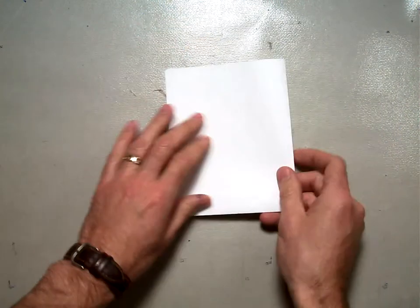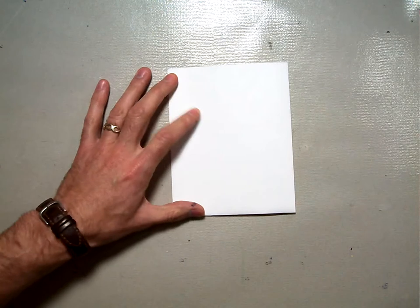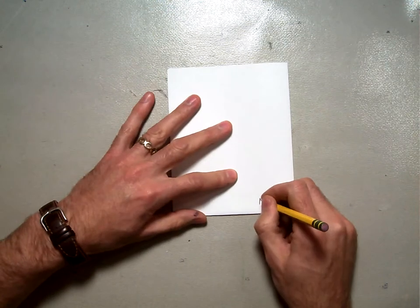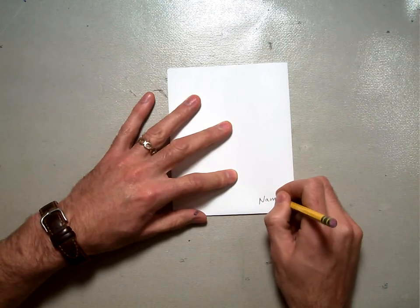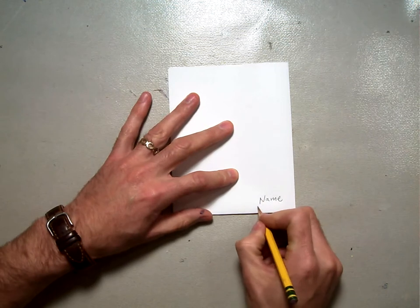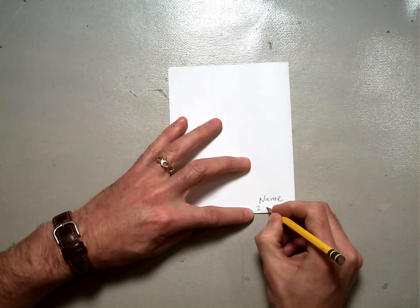So, fold your paper back up and put your name on it, down in the corner. And put your grade, which is two, and your section, your teacher's name.